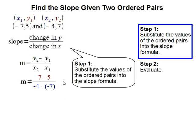Now we substitute. x1 is negative 7, so x1 gets replaced by negative 7. y1 gets replaced by 5, x2 gets replaced by negative 4, and y2 gets replaced by 7.